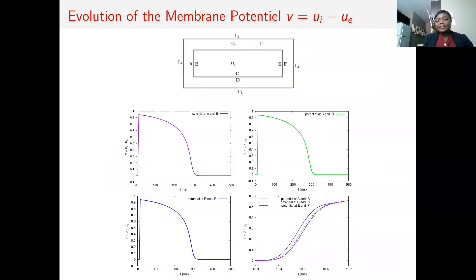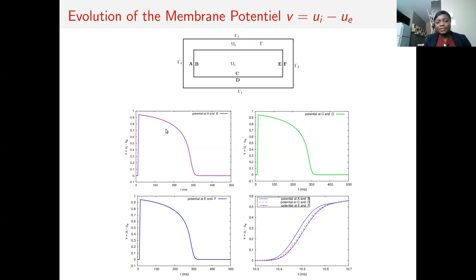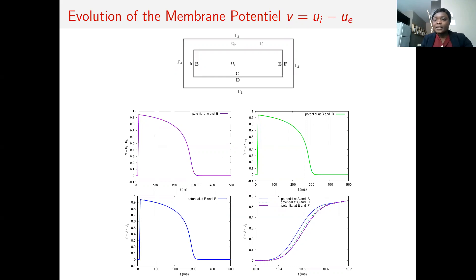To better understand the behavior of the cell during stimulation, we take several points close enough to the membrane gamma — points A, B, C, D, E, and F. We plot the potential difference across the membrane against time for each of these points. Zooming in on the three pre-plots during the stimulation, we can see that the cell does not depolarize at exactly the same time — there is a lag of about 0.02 milliseconds.